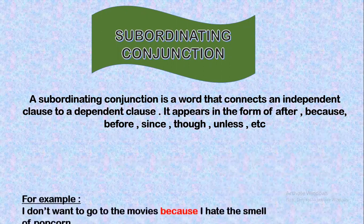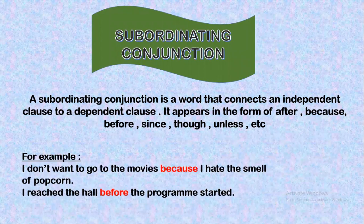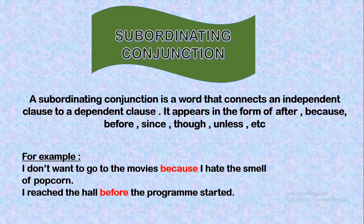Let us see the examples. I don't want to go to the movies because I hate the smell of popcorn. I reached the hall before the program started. Here you can see the words 'because' and 'before' are playing the role of subordinating conjunction. They are connecting the independent clause and a dependent clause together.